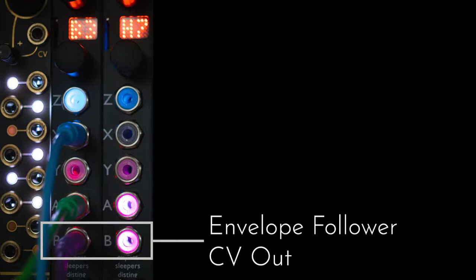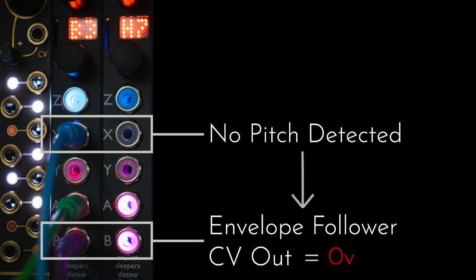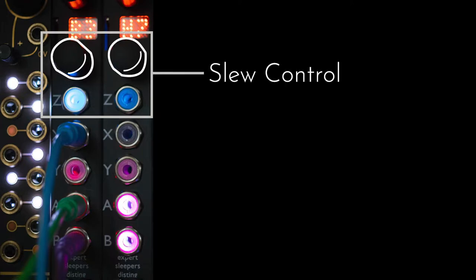Attempting to tune the oscillator to C3 with zero volts on the pitch input, however, led to some bizarre scaling issues, and I found the results to be much better if I simply tuned the oscillator to match the guitar based on a note in the middle of the range. Output B is the envelope of the signal at input X. When no pitch is detected, this falls to zero.